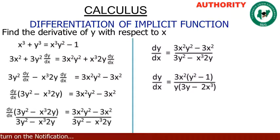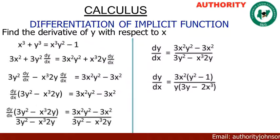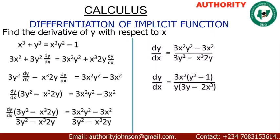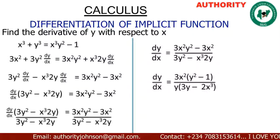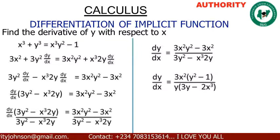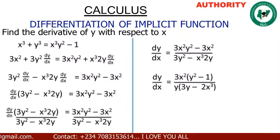Finally, the derivative of s³ + y³ = s³y² - 1 with respect to x gives us dy/dx = 3x²(y² - 1) / [y(3y - 2x³)]. Thank you very much for watching — let's take more examples for easy understanding.